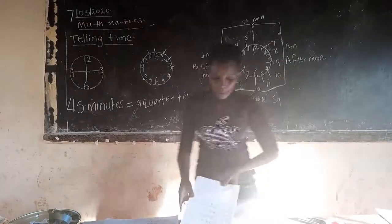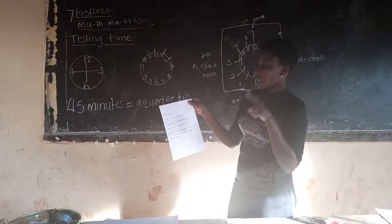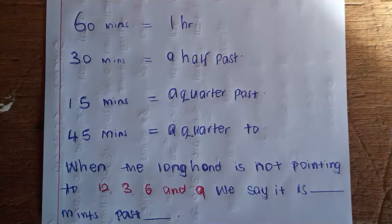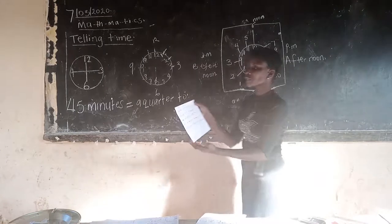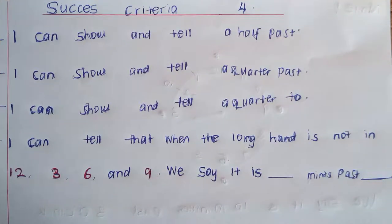Remember, we looked at sixty minutes which is equal to one hour, thirty minutes is a half past, fifteen minutes is a quarter past, and forty-five minutes is a quarter to. So today we are looking at forty-five minutes, which means a quarter to. Let's share the success criteria for today together. I can show a half past, I can show a quarter past, I can show a quarter to.